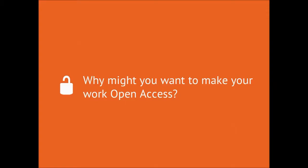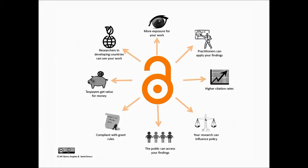So that's what you can get out of open access in terms of finding things. Why might you want to make your own work open access? There are a whole range of arguments: higher citation rates for open access, the ability to influence policy in government or business, public access to your findings, and an ethical dimension — you are in receipt of public funds through the university, so if the public have paid for your research through their tax, arguably they shouldn't have to pay again to read it.